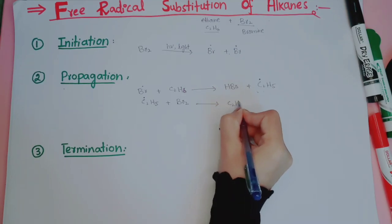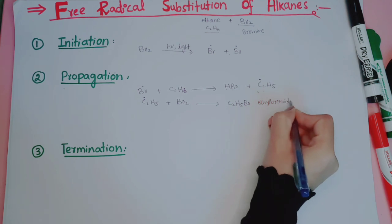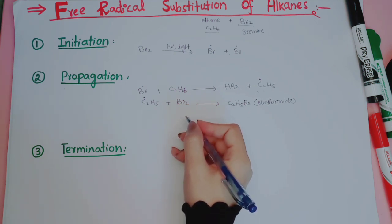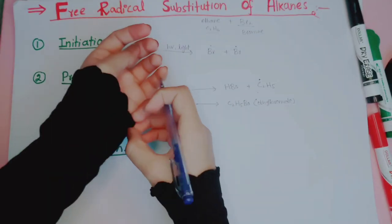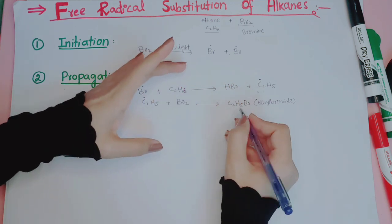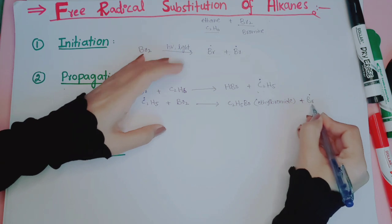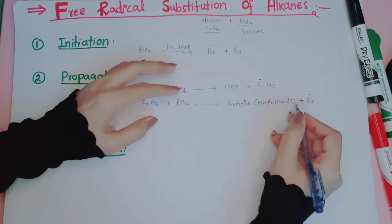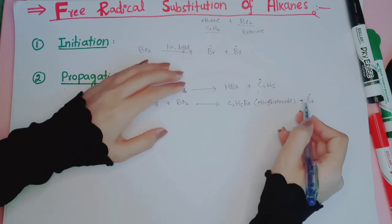Just like bromine radicals, the ethyl radical is unstable, so it reacts with a Br₂ molecule. It forms ethyl bromide (C₂H₅Br). The ethyl radical takes one bromine from the bromine molecule, brominating the ethane, and the other bromine is left as a bromine radical. So one bromine brominated the alkane and another bromine radical is left over.